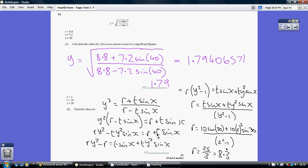We then adjust to get everything with an r onto one side, the left, and everything without an r onto the other. I've subtracted r and added ty squared sin x to get to here. Everything on the left includes an r, everything on the right excludes an r. So I can now factorise.